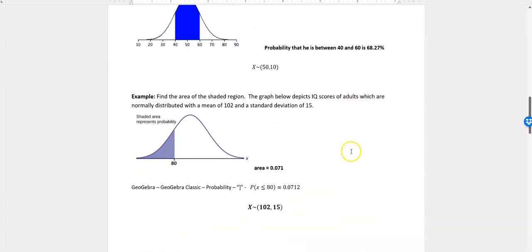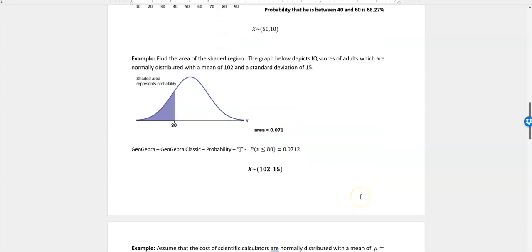The last example is find the area of the shaded region. This is IQ scores for adults normally distributed with a mean of 102 and a standard deviation of 15. What's the probability or what's the cutoff point here? What's this area under here if we know the cutoff point is 80? If the person had an IQ of 80, what percentage of people are below 80? If you went into GeoGebra, you would click on GeoGebra Classic, then probability. You would do less than because we're looking at the left side. Then you would say less than 80, and it would give you this area. You can round that off to 0.0112.